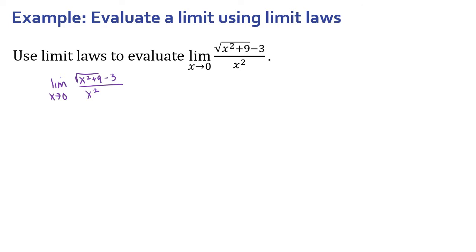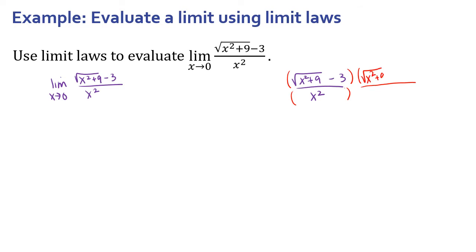So the limit as x approaches zero of the square root of x squared plus nine minus three, all over x squared. To simplify this, let's find this other function on the side. We're going to multiply both the numerator and the denominator — because we need to keep this equation balanced — by the conjugate of that square root. The conjugate is going to be the square root of x squared plus nine plus three. So instead of subtracting three, we add three. That's what the conjugate means.